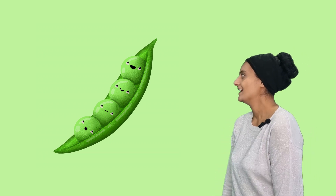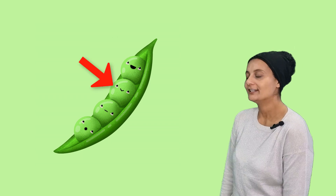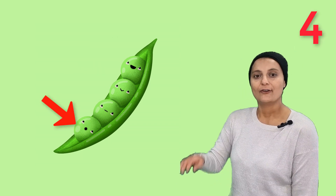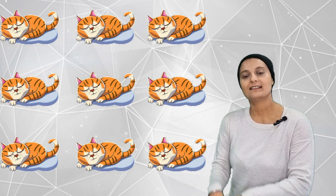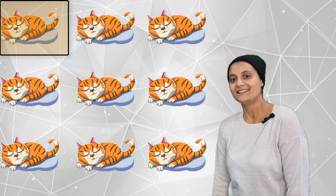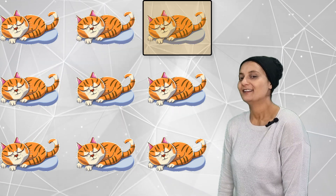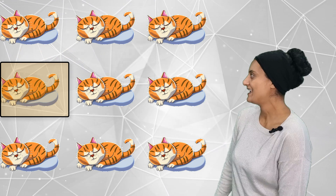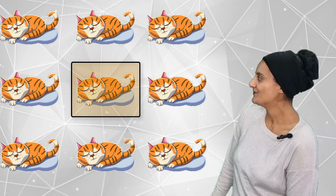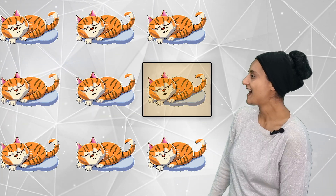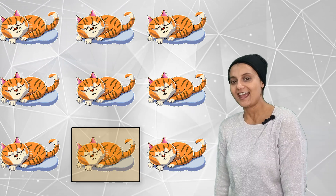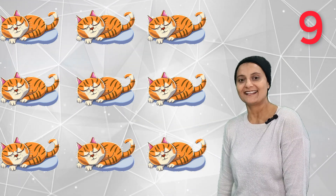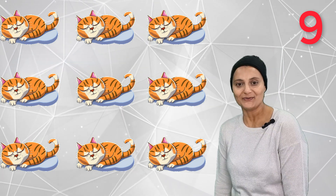How many peas in a pod? We can see there are one, two, three, four. Four peas in a pod. How many sleeping cats are there? Meow one, meow two, meow three, meow four, meow five, meow six, meow seven, meow eight, meow nine. Nine sleeping cats.